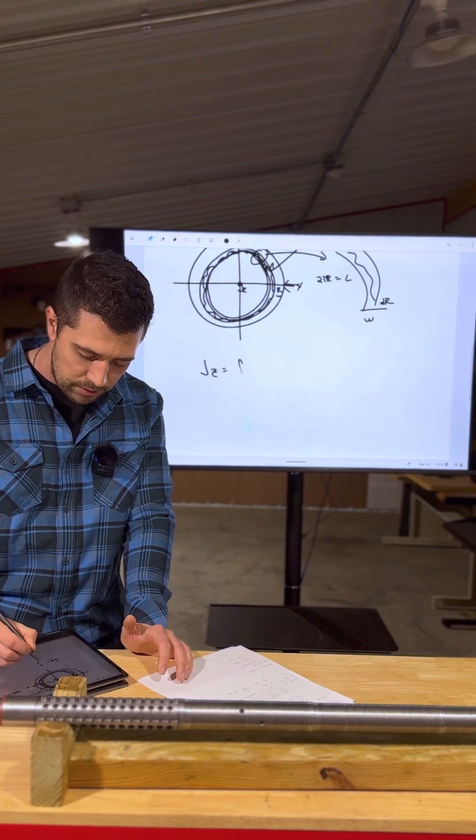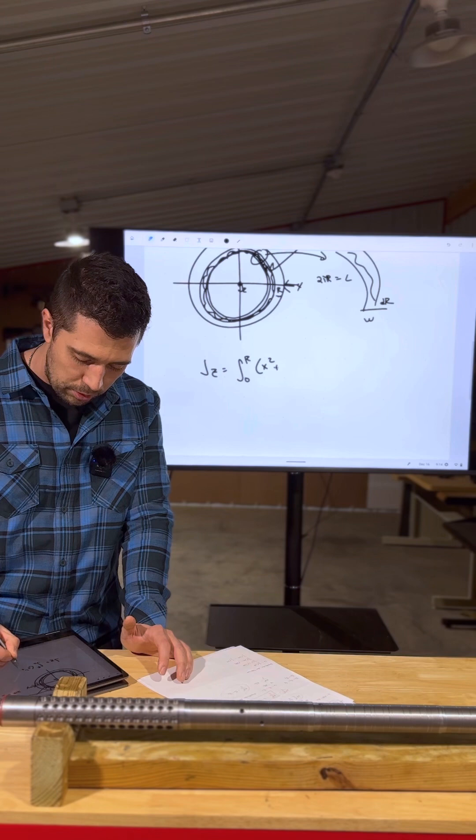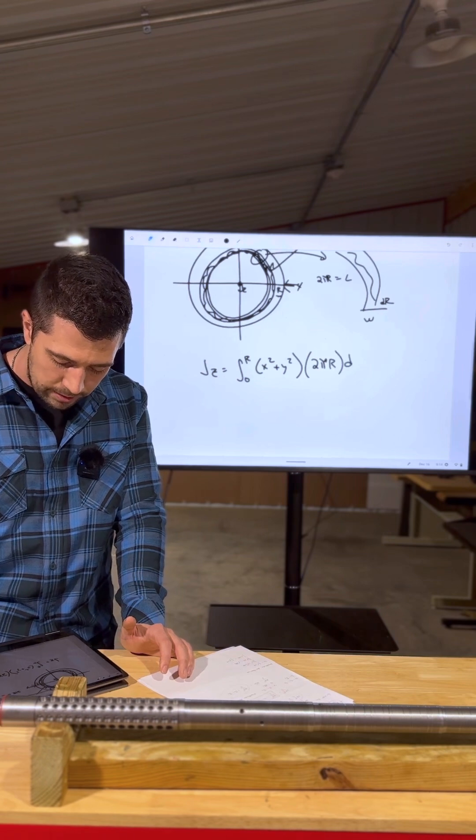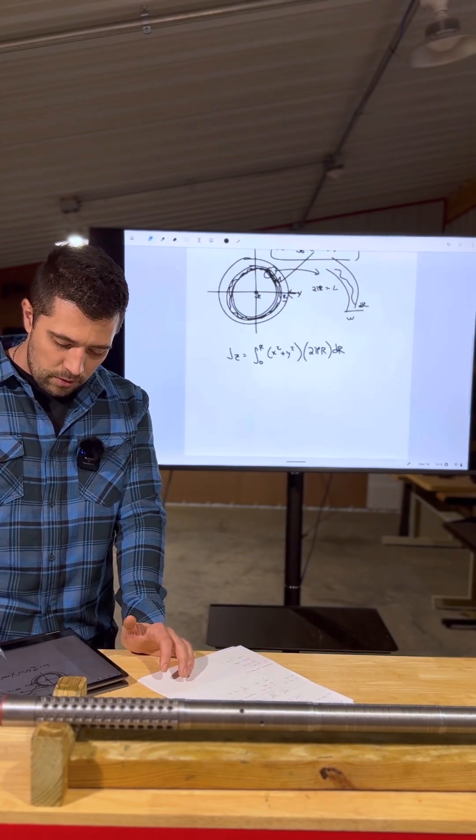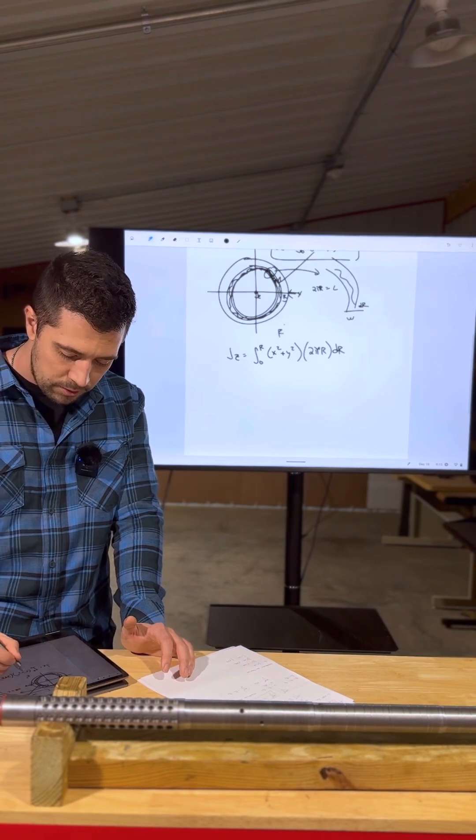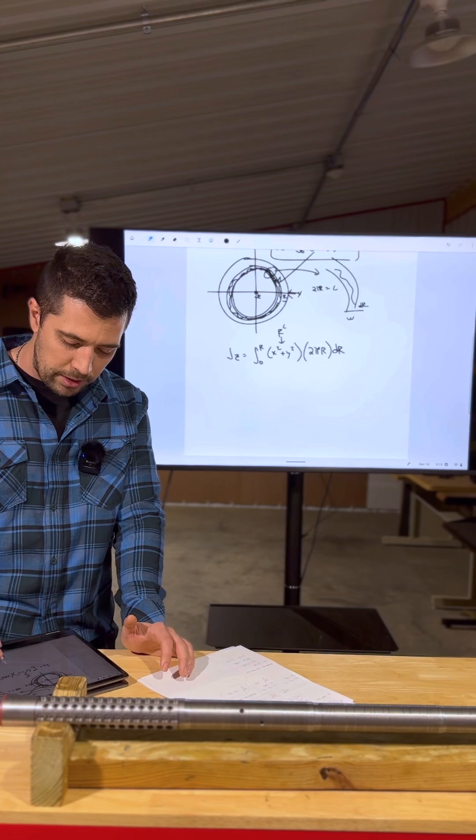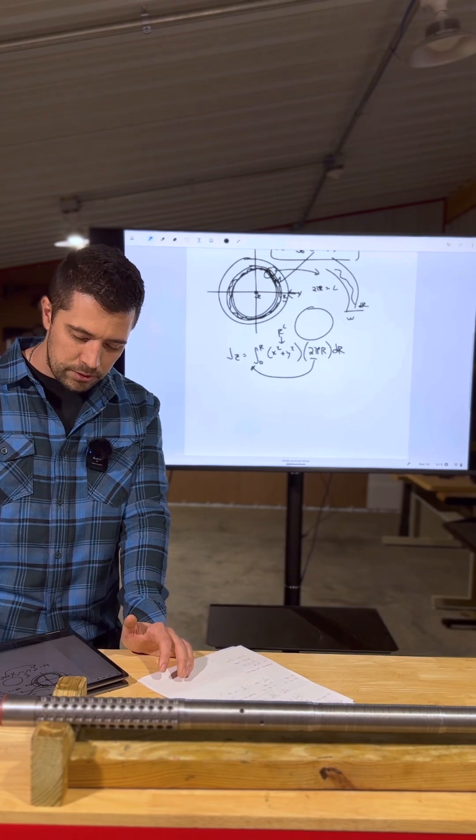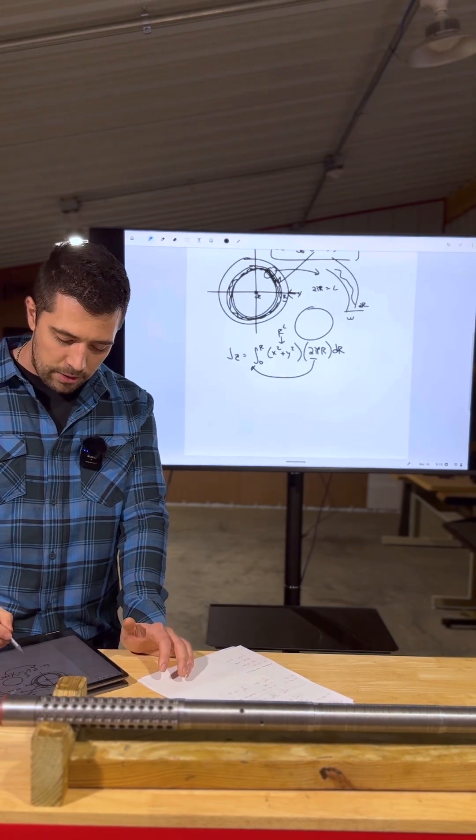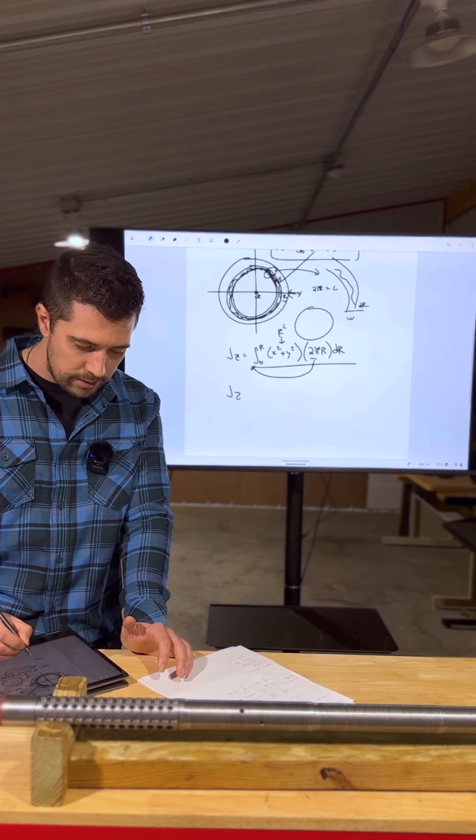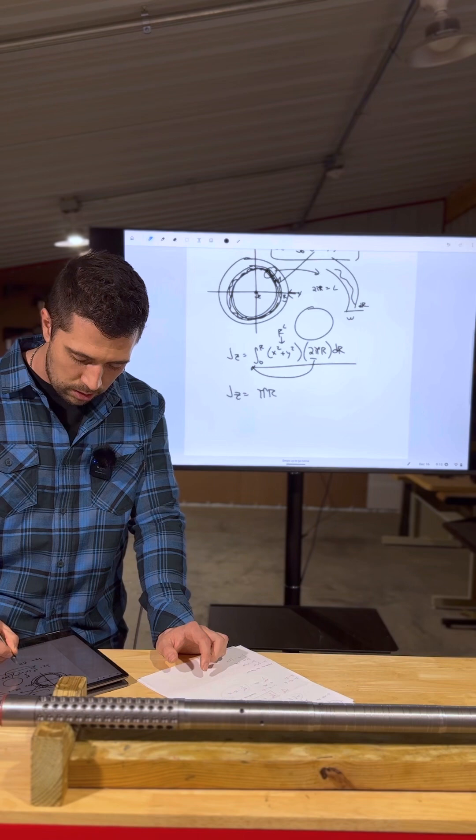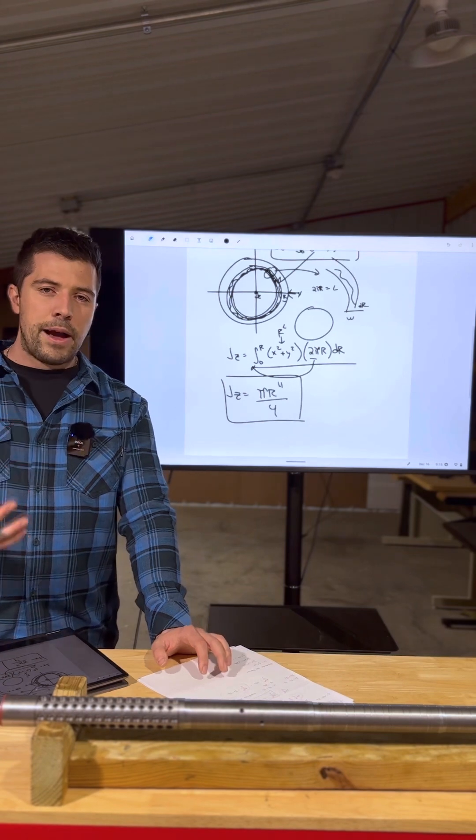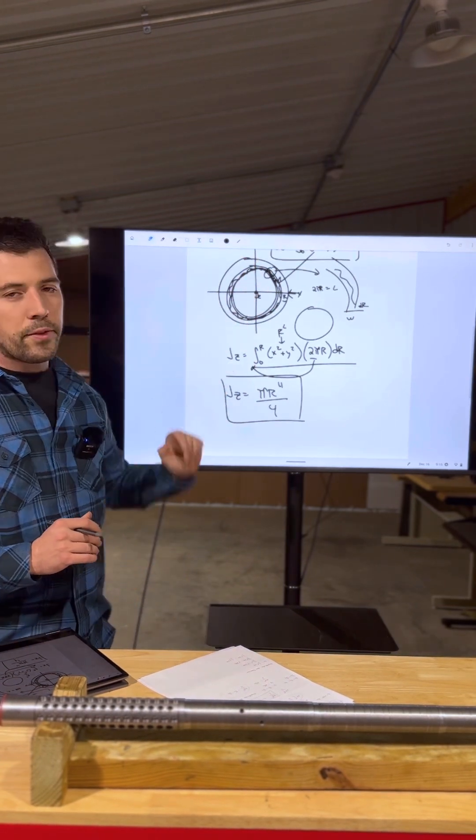So we can rewrite our baseline equation as JZ equals the integral zero to R, x squared plus y squared times 2πR with respect to dR. We can plug R squared in for x squared plus y squared because that's the equation for any circle. And we can pull out our constants because that is not a variable. And then when we evaluate this integral, we get JZ equals πR to the fourth over 4.